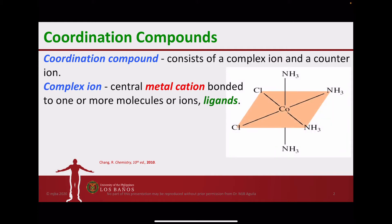An example is shown where we have cobalt as the central metal ion, and ammonia and the chloride ion as the ligands. The complex ion can be overall cationic — if this structure results in a positive charge, that's a cationic complex. It can also be anionic, where the overall charge is negative, or a neutral complex, where the overall charge is zero.